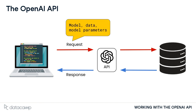Our request in this case will specify which model we want, the data that we want the model to use, and any other parameters to customize the model's behavior. The response containing the model result is then returned back to us.